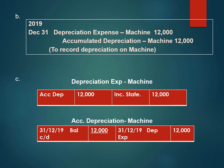For question C, to draw the T-accounts for depreciation expense and accumulated depreciation: in the depreciation expense — machine account, the double entry shows accumulated depreciation on the debit side at RM12,000, and at the end of the accounting period we post it to the income statement for RM12,000. In the accumulated depreciation — machine account, the double entry shows depreciation expense on the credit side at RM12,000, and the closing balance is also RM12,000.